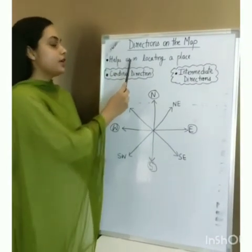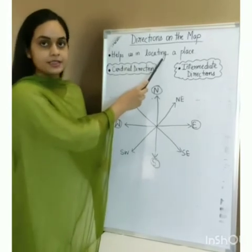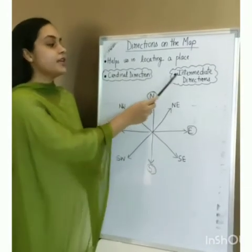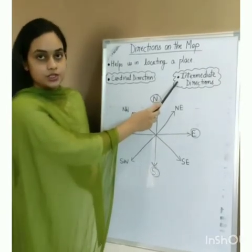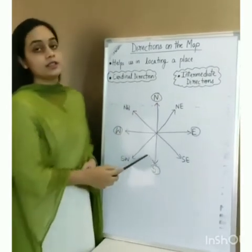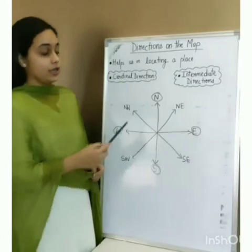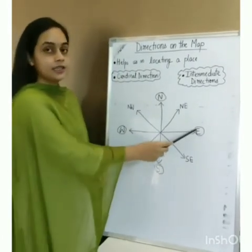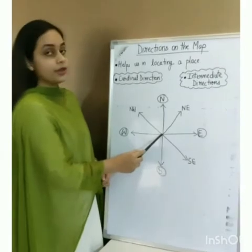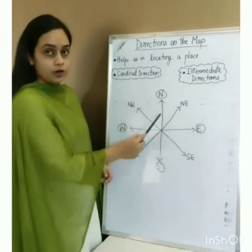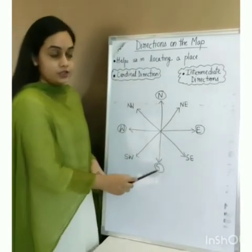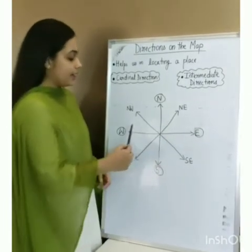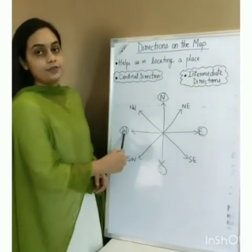Direction helps us in locating a place. Direction is divided into two types: cardinal directions and intermediate directions. The four major directions are known as cardinal directions — they are North, South, East, and West. If you are standing facing North, South will be behind you, East will be on your right hand side, and West will be on your left hand side.